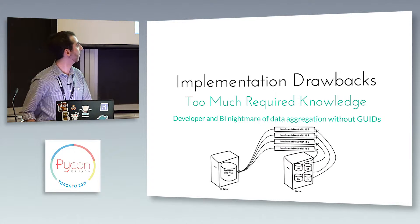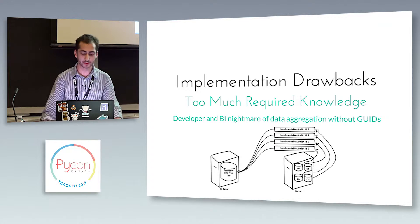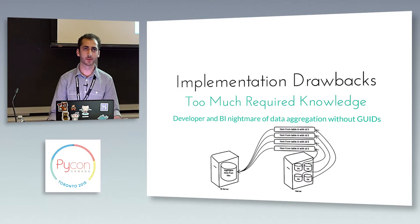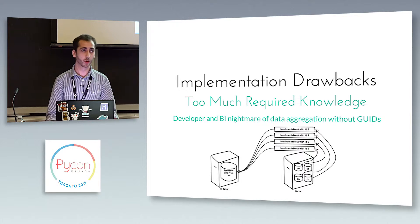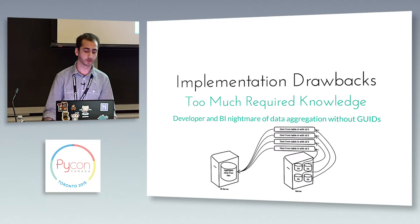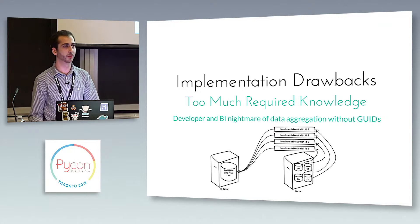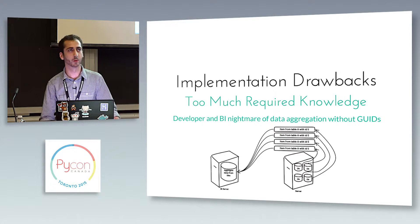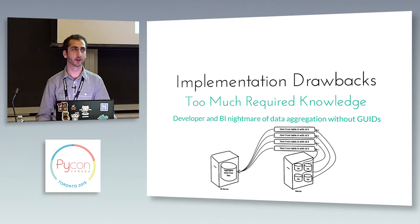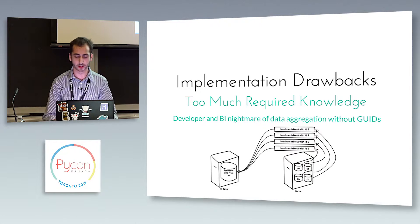Another problem was that sometimes people would forget to add ID fields with globally unique IDs. So if I had invoices on database one and two, they could have the same primary key value, which on the individual databases isn't a problem. But if you're trying to aggregate data from multiple databases and they all have the same ID, you can get into some interesting code problems — and when BI looks at it and tries to do some analysis, they're going to be equally confused.